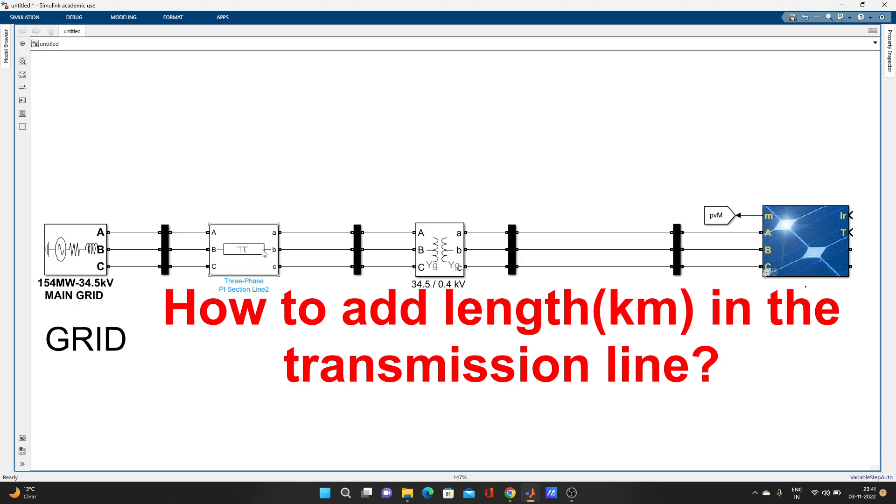Adding length in transmission line. Suppose you normally add transmission line, this part is not there. Then there is no way to specify that your transmission line is 1 km length or 2 km length. So for that you need 3-phase PI section line. You can simply double-click to search.